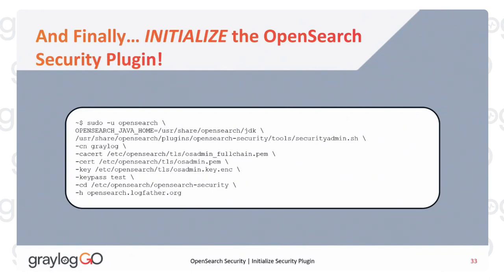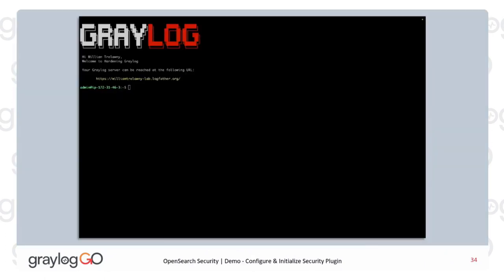The cluster name has to match what is set in opensearch.yaml as cluster.name. Then the path to your CA cert chain — the chain of trust up to your CA — the server certificate, key, key password, configuration directory with all the security plugin files, and lastly the hostname of the OpenSearch server you're securing.